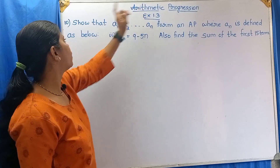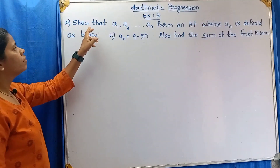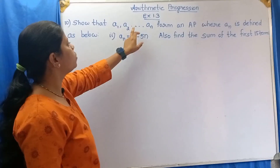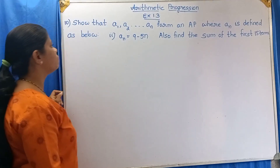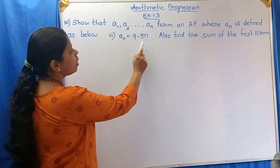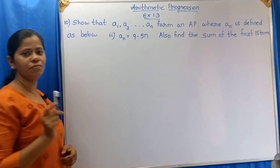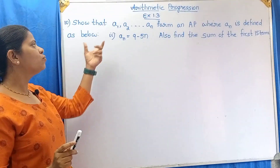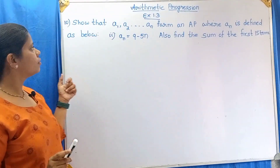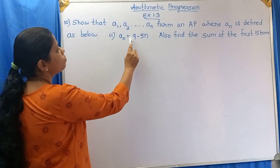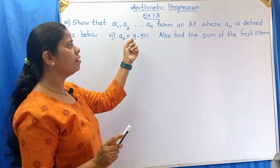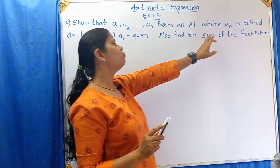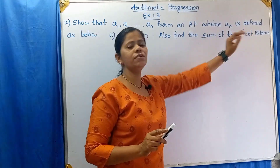Arithmetic Progression, Exercise 1.3, Tenth Question. Show that A1, A2, and so on up to An form an AP, where An is defined as An = 9 − 5n. Also find the sum of the first 15 terms. There are two parts in this question.